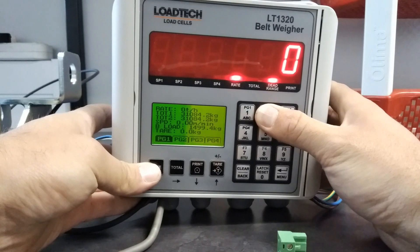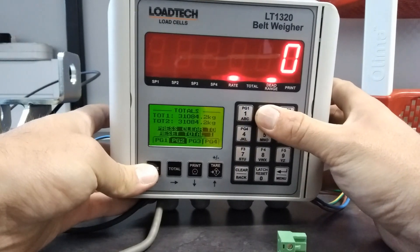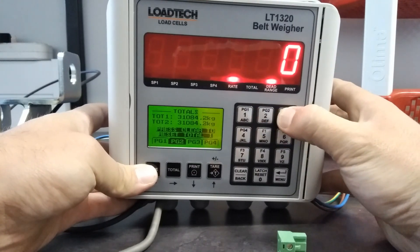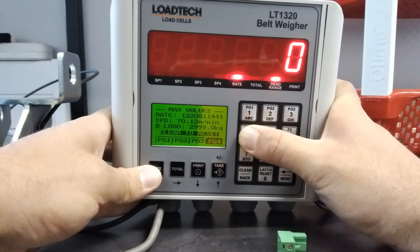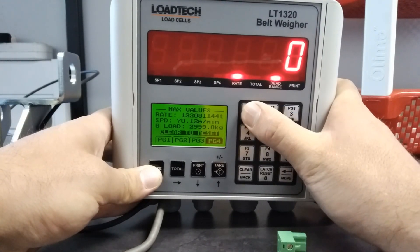First we've got page one where you can see your rate, total, speed, and load. Page two you can see the totals and clear them. Page three you can see your set points, and page four you can see your max values.